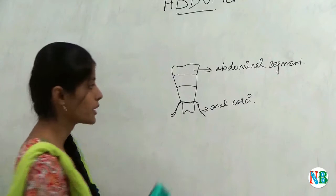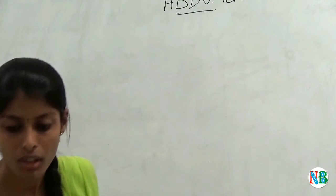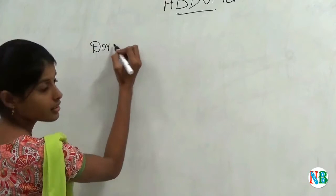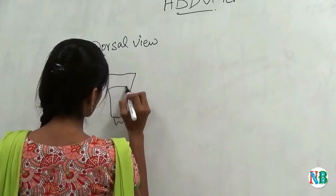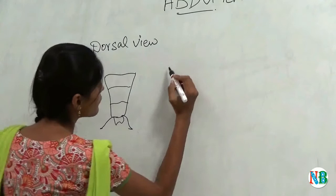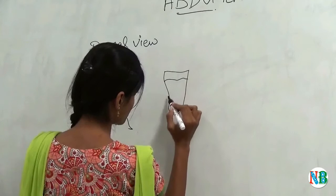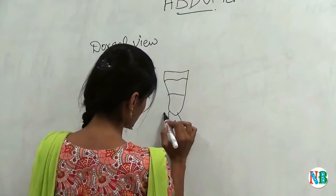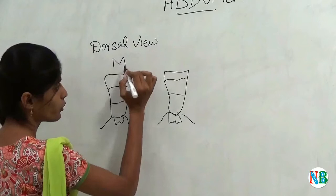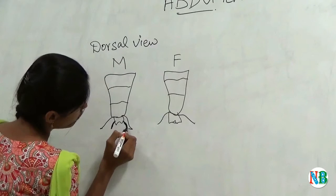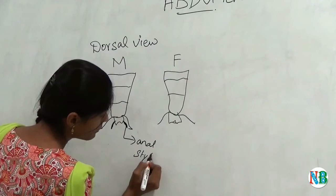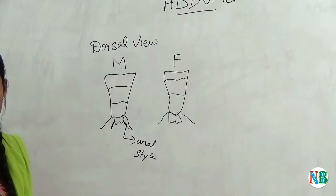Now we will see the lower part of the abdomen in different views, in dorsal and ventral view. First, we will see this in dorsal view. This is the male cockroach and this is the female cockroach. The only difference between the male and female is male cockroach contains two things called anal styles. So anal styles will be present in the male cockroach and there will be no anal styles present in female cockroach.